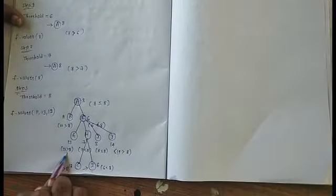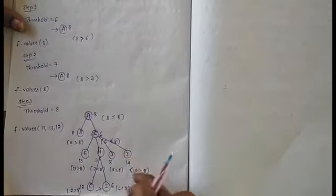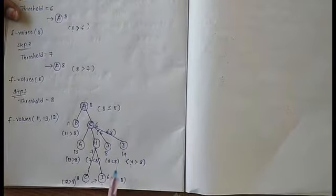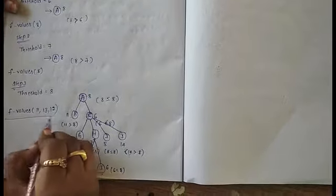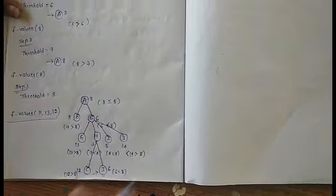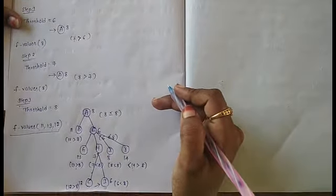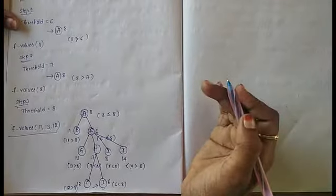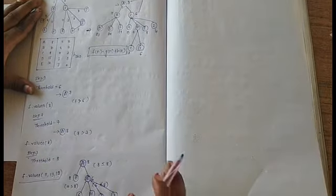So we explore G, then H (left child), then I (right child) — I is our required goal node, so we stop. J's value of 14 is greater than 8, so it is added to the F-values list. The F-values list contains 11, 13, and 12. Through this iterative deepening process, we reach the goal node.